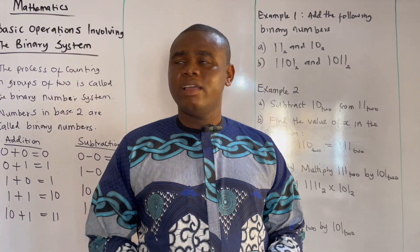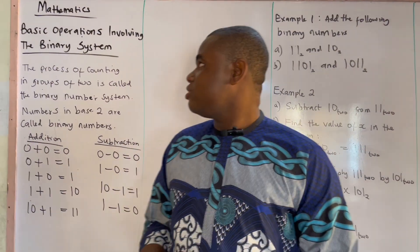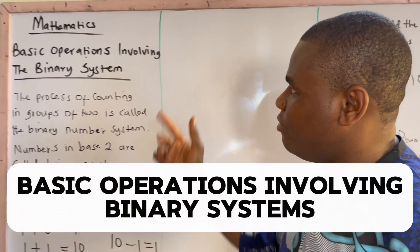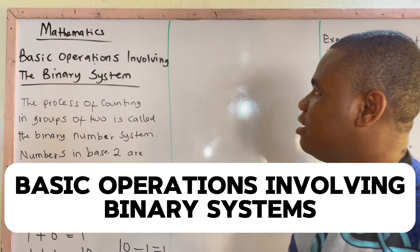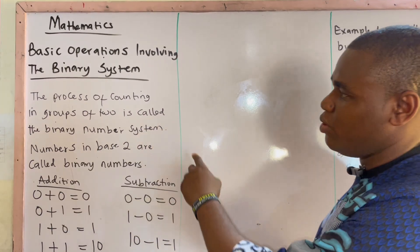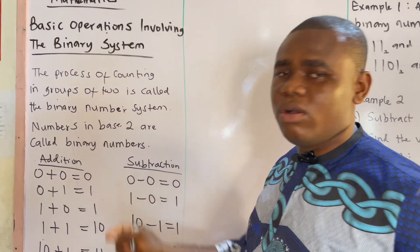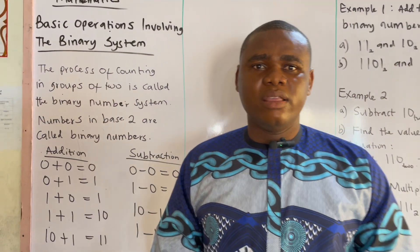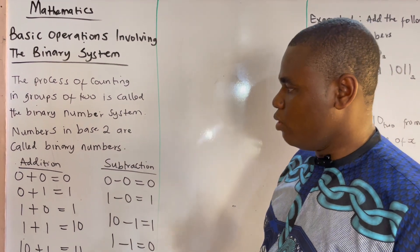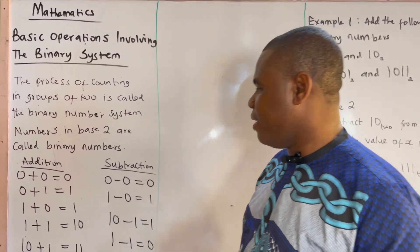Good morning, everyone. Welcome to our YouTube channel. Today's lesson is going to be on basic operations involving the binary system. The process of counting in groups of two is called the binary number system, and numbers in base two are called the binary numbers. There are basic rules you have to follow when handling basic operations involving the binary number system.